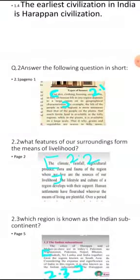Let us move on to question number 2: answer the following questions in short. Write down 2.1. The question is on page number 1: what does human life depend on? Our diet, clothing, housing, occupation, and geographical characteristics. The answer is on page number 1.